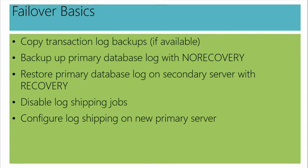If I have a failure, back up the primary database log with no recovery — that's going to capture the tail of the log. Then perform a normal database recovery on the destination. It's going to have some jobs associated with being a secondary — disable all of those, but don't kill the jobs, just disable them. Then establish high availability at the destination and configure log shipping on that machine. For clients, if the application has a connection string that points to an IP address, you can change the IP address of the destination. Or if the connection string points to a DNS name, you can change the IP address in DNS and clients are redirected transparently.